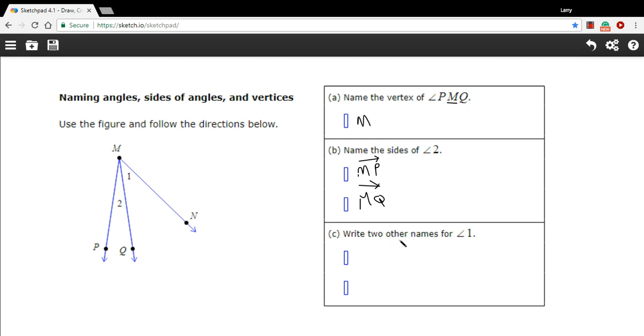Alright, now C says write two other names for angle number one. Well, that's this one. And it could be either QMN or NMQ, as long as M comes in the middle because that's the vertex. So we could write this as Q.